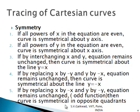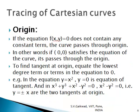To find if a curve passes through the origin, check that f(x, y) = 0 contains no constant term, or equivalently that (0, 0) satisfies the equation. To find tangents at the origin, equate the lowest degree term or terms to zero. For example, in y = x² the lowest degree term gives y = 0 as the tangent. In x³ + y³ + x² − y² = 0, equating x² − y² = 0 gives y = ±x as the two tangents at the origin.